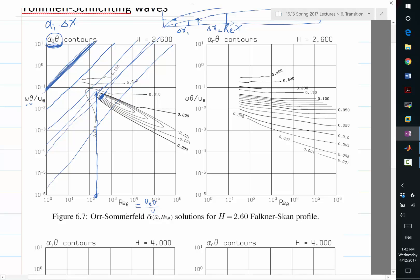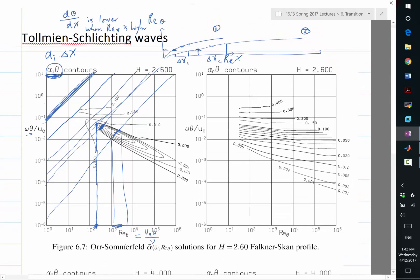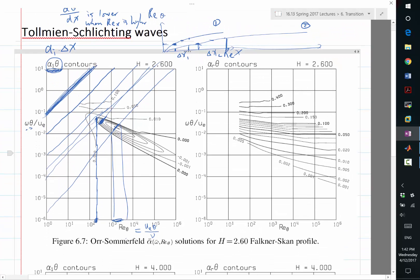Also, over this region, if you map it over here, we have a longer delta theta, and therefore a longer delta X for this to transition. So the first transition prediction method, based on this analysis, is to select a wide range of frequencies.